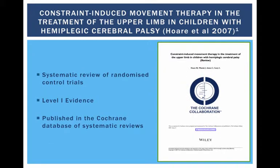The highest level of evidence I found was a systematic review of randomized control trials published in 2007. This is not particularly recent, but was the most relevant review available. The systematic review by Hoare et al. can be found on the Cochrane database of systematic reviews. The review evaluates the effect of constraint-induced movement therapy, modified constraint-induced movement therapy, and forced use in children with cerebral palsy.